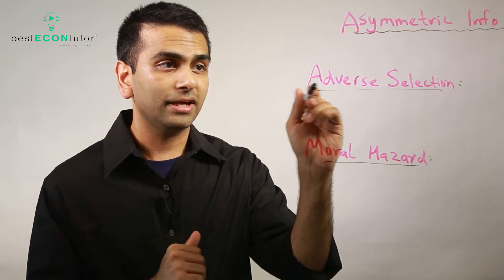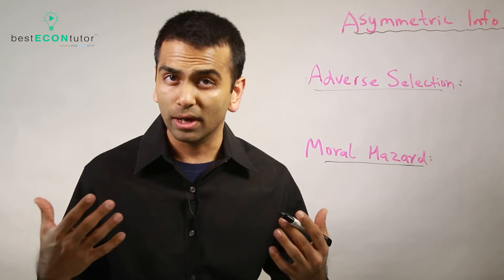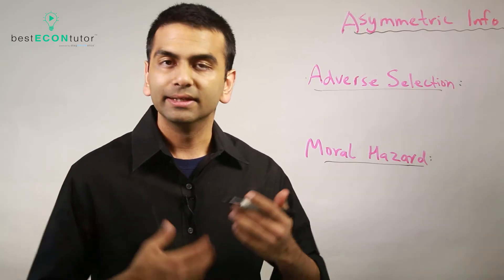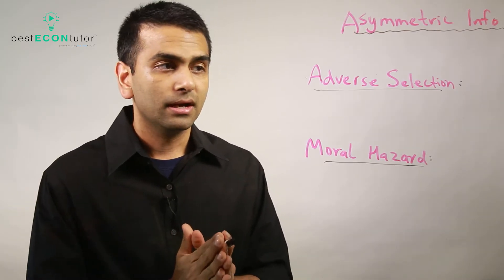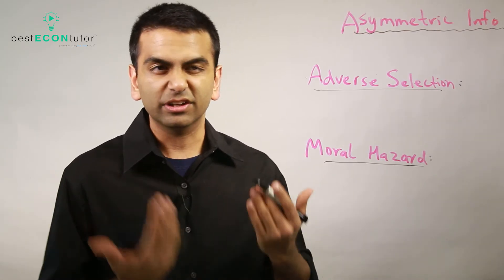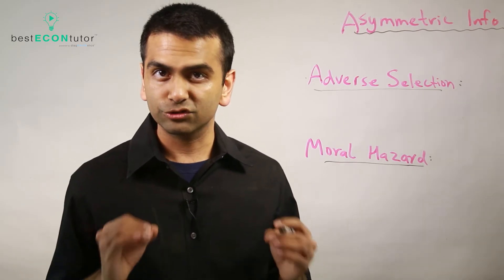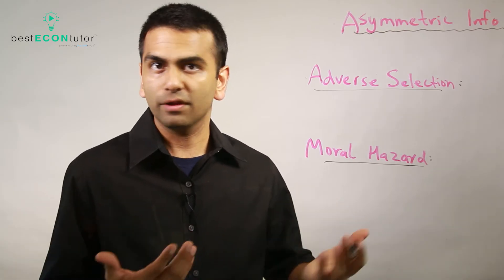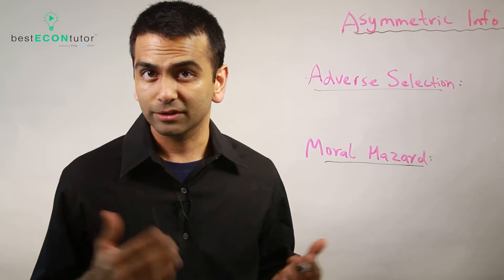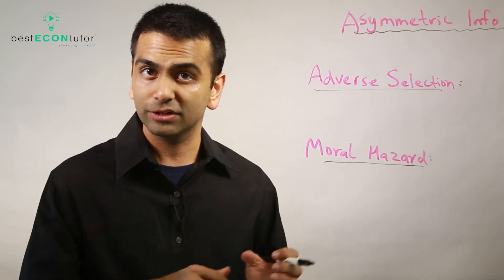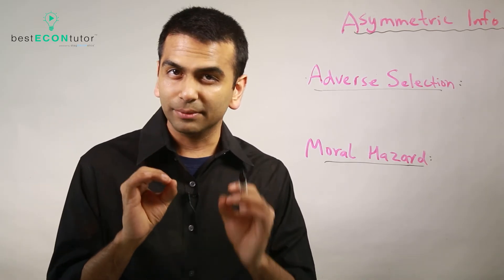Now let's talk about asymmetric information — that's when one party usually has more information than the other; it's not symmetric. There are two key vocab terms that students tend to confuse: adverse selection and moral hazard. They both relate to something going wrong when there's asymmetric information, but there's an important difference between them.